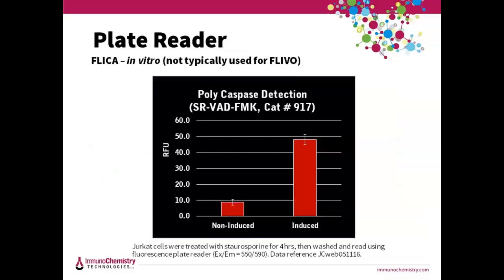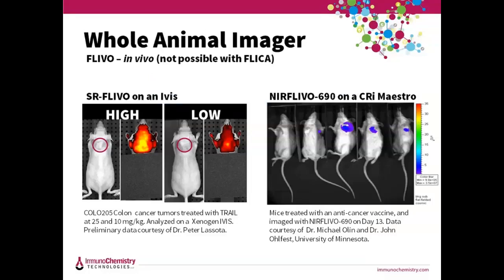One difference with these techniques is that FLICA is used with cultured cells, so they can be analyzed with a plate reader, while animal stains with FLIVO would not typically be used on a plate reader. Most people use a flow cytometer if they want to quantitate FLIVO. Here's some data from a plate reader using FLICA — the in vitro reagent. These are Jurkat cells treated with staurosporine and then labeled with our red FLICA SR-VAD-FMK and analyzed with excitation at 550 and emission at 590. Apoptotic-induced cells are about five times higher than the control non-induced cells.